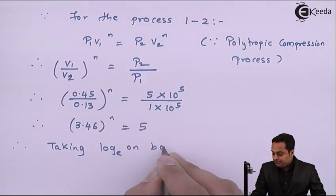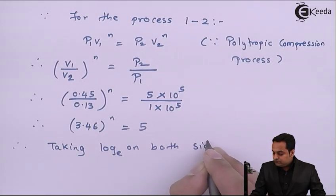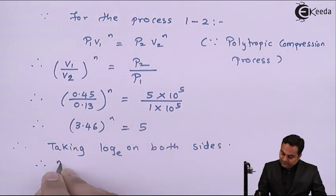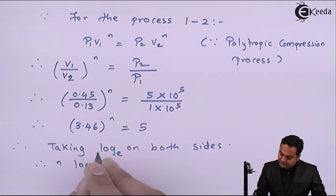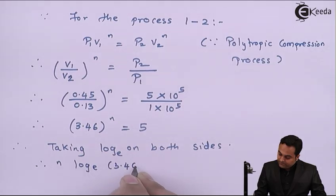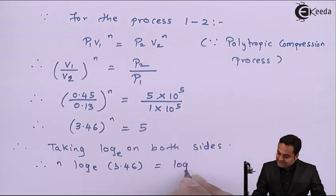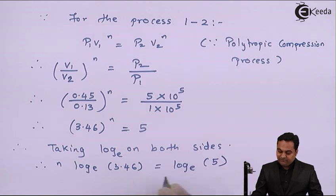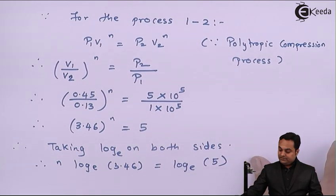we have n multiplied by log to the base e of 3.46 is equal to log to the base e of 5, and then I'll get